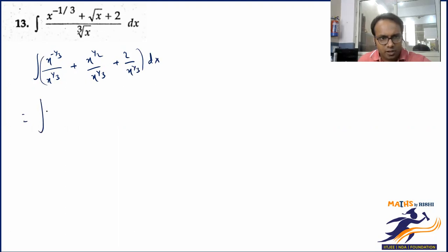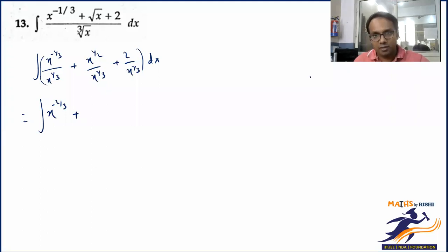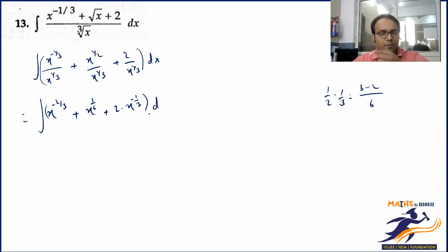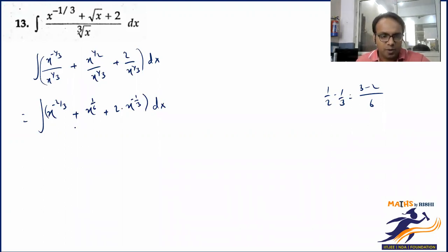So 1/3 going up minus 1/3: that becomes x to the power 1/6. And this one is 2 times x raised to the power minus 1/3. Any constant — whether in the numerator, denominator, inside an integration or differentiation — doesn't affect the function; it's treated as a constant and plays no role.